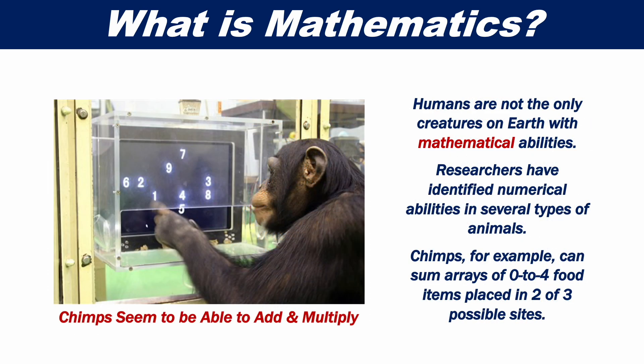Humans are not the only creatures on earth with mathematical abilities. Researchers have identified numerical abilities in several types of animals. Chimpanzees, for example, can sum arrays of 0 to 4 food items placed in two or three possible sites.